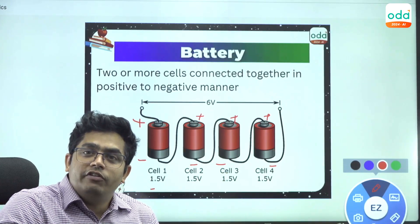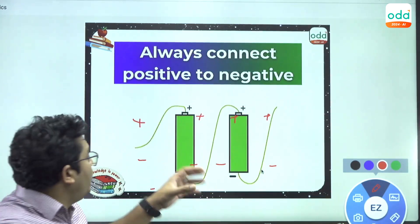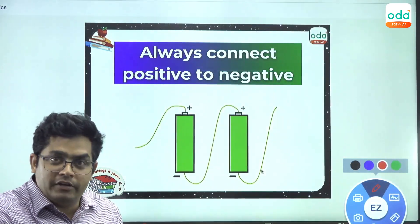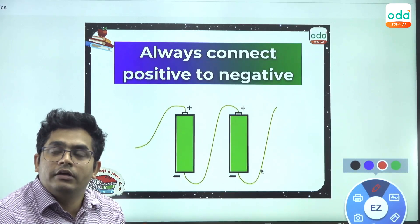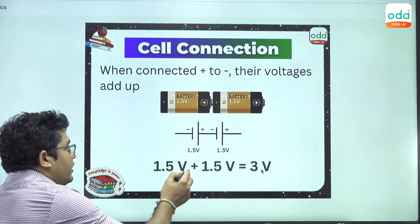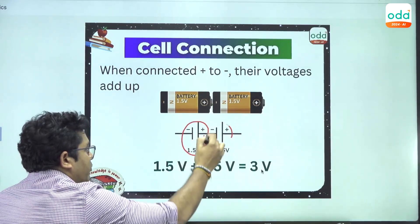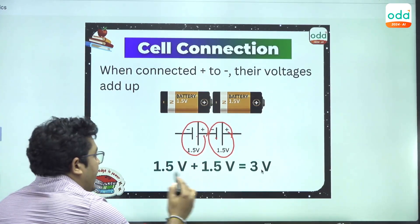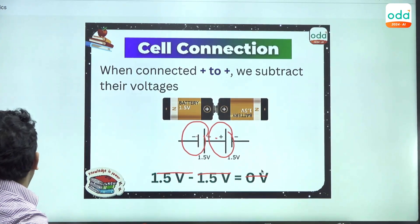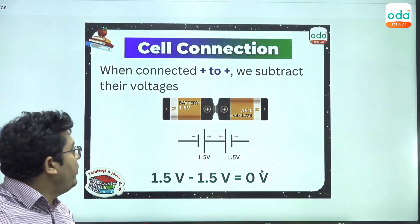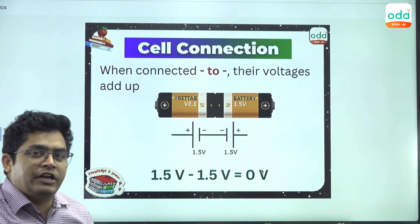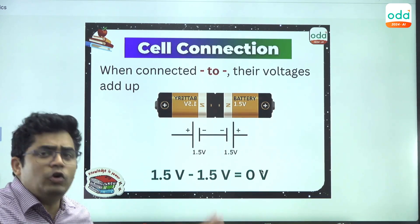Whenever two cells are connected, they must be connected in the positive-to-negative manner — then we can add the voltages. For example, one cell of 1.5 volt connected positive to negative with another 1.5 volt cell gives us 3 volt. But when connected positive-to-positive, or negative-to-negative, we subtract the voltages. The reason the cell won't work when connected positive-to-positive is because you get 0 volt in that case.